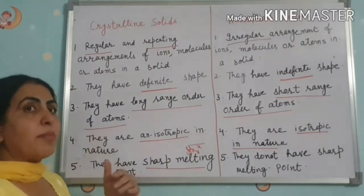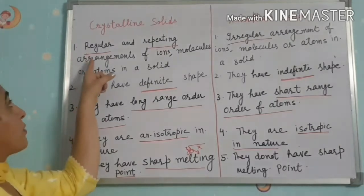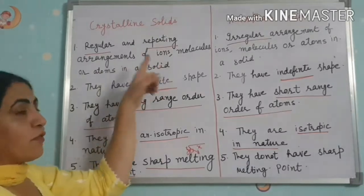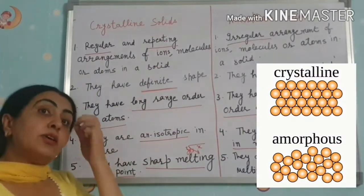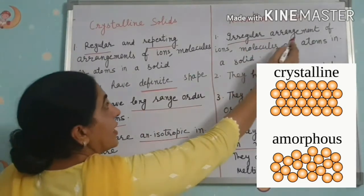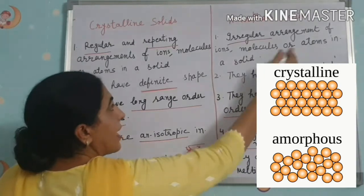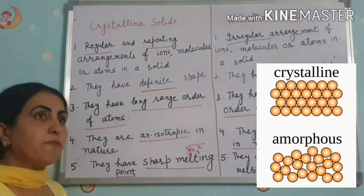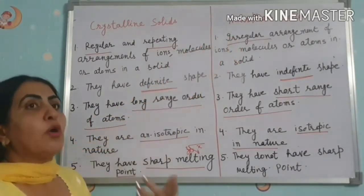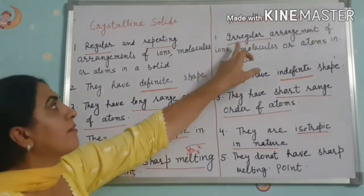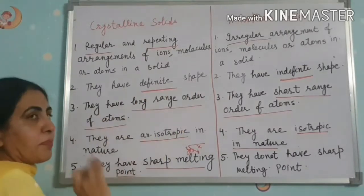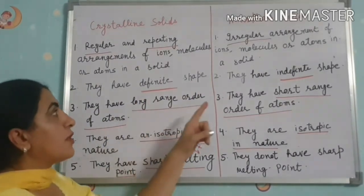The first difference is the definition. In crystalline solids, they have a regular and repeating arrangement of ions, molecules, or atoms in a solid. In amorphous solids, there is an irregular arrangement of ions, molecules, or atoms. That is why amorphous means without any form — hence the irregular arrangement.